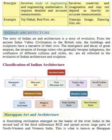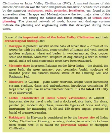Classification of Indian architecture: Harappan art and architecture — a flourishing civilization emerged on the banks of the river Indus in the second half of the third millennium BCE and spread across large parts of northwestern and western India. This is what is known as the Harappan or Indus Valley Civilization (IVC).